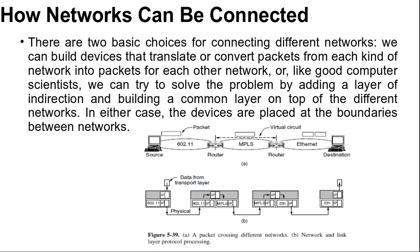There are two basic choices for connecting different networks. We can build devices that translate or convert packets from each kind of network into packets for each other network. Or we can try to solve the problem by adding a layer of indirection and building a common layer on top of the different networks. In either way, the devices are placed at the boundaries between networks. Early scientists agreed on a common layer to hide the differences of existing networks. This approach has been tremendously successful. The layer they proposed was eventually separated into TCP and IP protocols. After that, IP is the foundation of the modern internet.